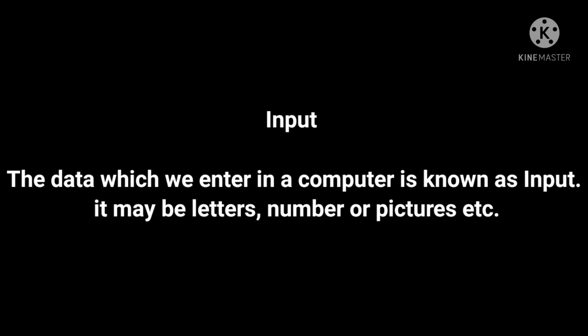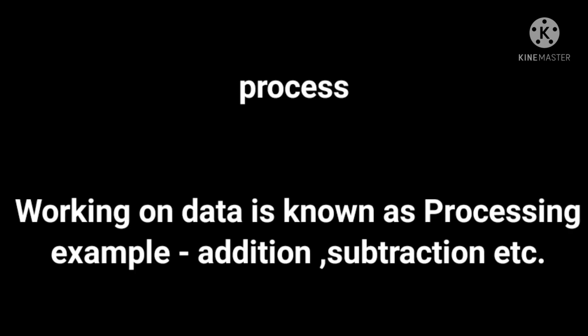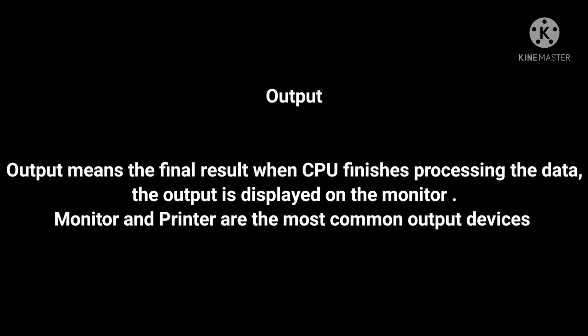Input: the data which we enter into a computer is known as input. It may be letters, numbers, or pictures, etc. Process: working on data is known as processing. Examples include addition, subtraction, etc. Output means the final result when the CPU finishes processing the data.